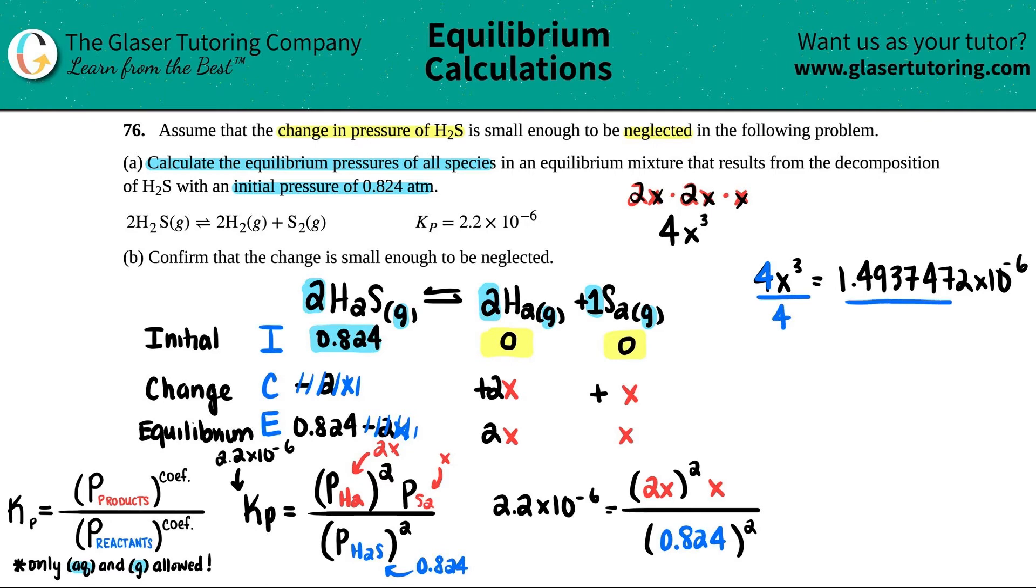Now let's solve for X. We got to divide by 4 on both sides. So now we have X cubed equals this divided by 4, 3.73436, 8 times 10 to the negative 7th. And now we need to undo the cubed. So we could do the cube root. There's a function on that on the calculator. But just remember, another way of doing a cubed to undo it is raise it to the 1 third. That's essentially the same as the cubed root, right?